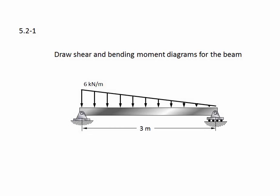Problem 5.2-1. Draw shear and bending moment diagrams for the beam. Here we have a simply supported beam with a pin at one end, a roller at the other, and a triangular distributed load with a maximum value of 6 kilonewtons per meter. The beam is 3 meters long.